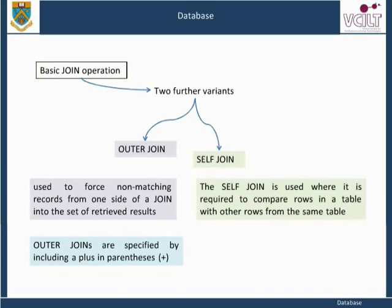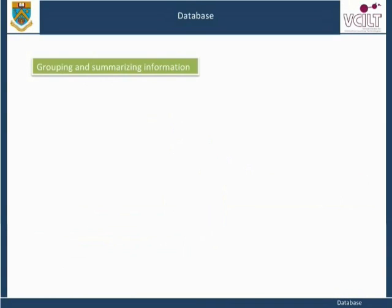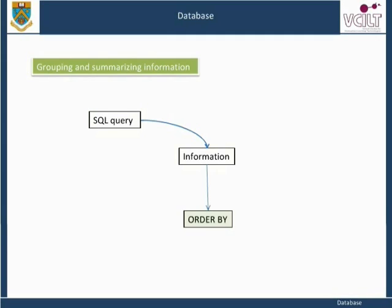The self-join is used where it is required to compare rows in a table with other rows from the same table. This comparison is facilitated through the use of aliases — alternative names which are associated with the table and so can be used to reference the table on different sides of a join specification. Information retrieved from an SQL query can very easily be placed in two separate groups or categories by use of the GROUP BY clause. The clause is similar in format to ORDER BY, in that the specification of the words GROUP BY are followed by the data item or items to be used for forming the groups.